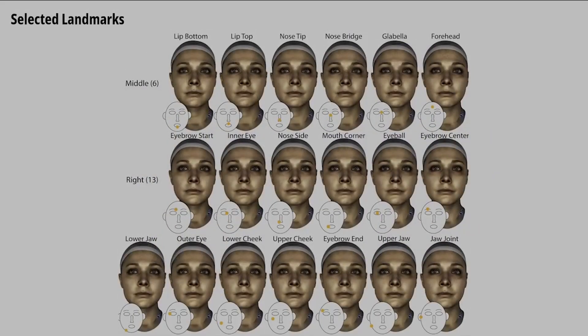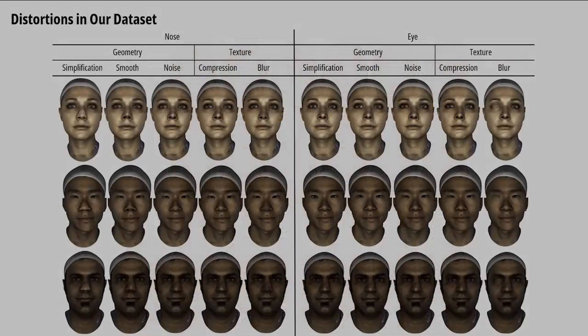We examine 32 locations on the face, chosen to provide even sampling and cover semantically important areas like the eyes, nose, and mouth. We use five distortions commonly found in visual computing applications — three on geometry and two on texture — and apply them locally to selected regions, resulting in 320 unique models for each face in our dataset.